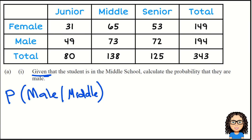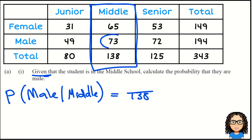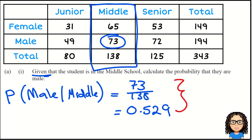Given that they are in the middle school, I'm now just looking at the middle school column. I've got 138 students in the middle school, and from those 138, how many are male? Well, 73 of them are. So the probability of being male, given that you're in the middle school, is 73 out of 138. You can leave your answer as a fraction, or turn it into a decimal — 0.529. NZQA will accept either of those answers and give you a tick for that. This is an achieved level question calculating the conditional probability correctly.